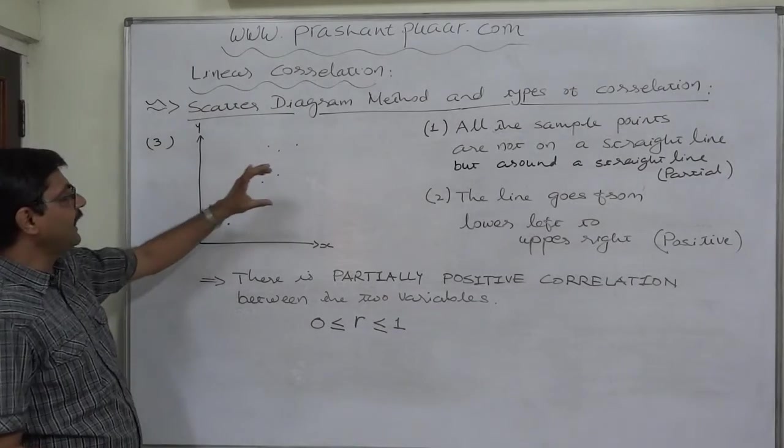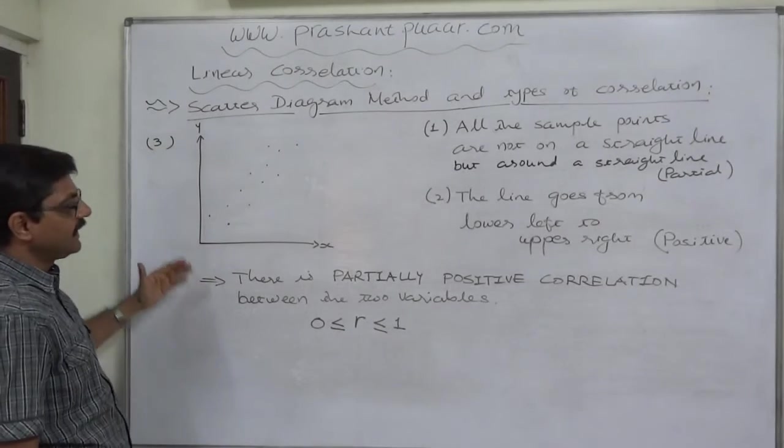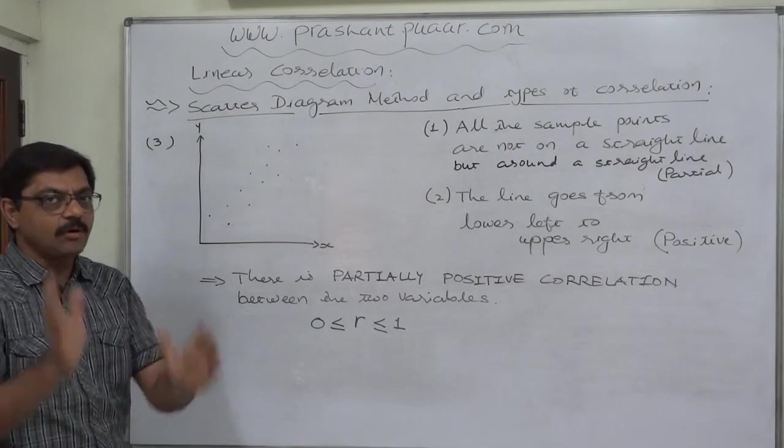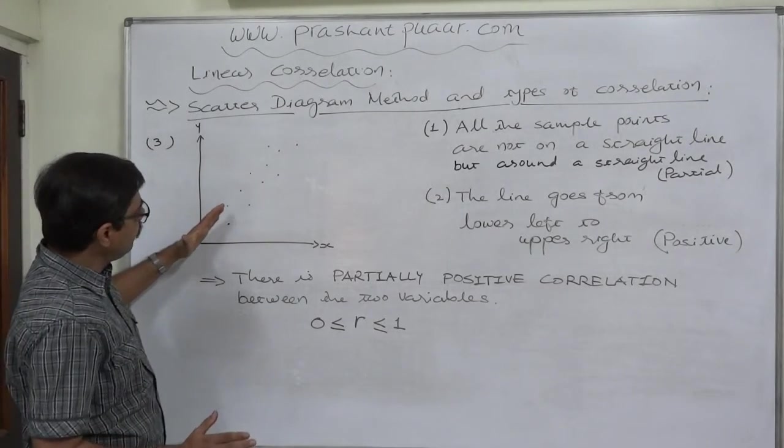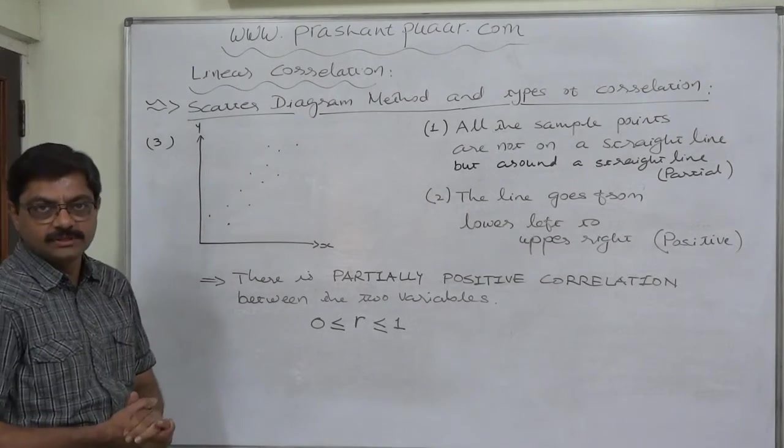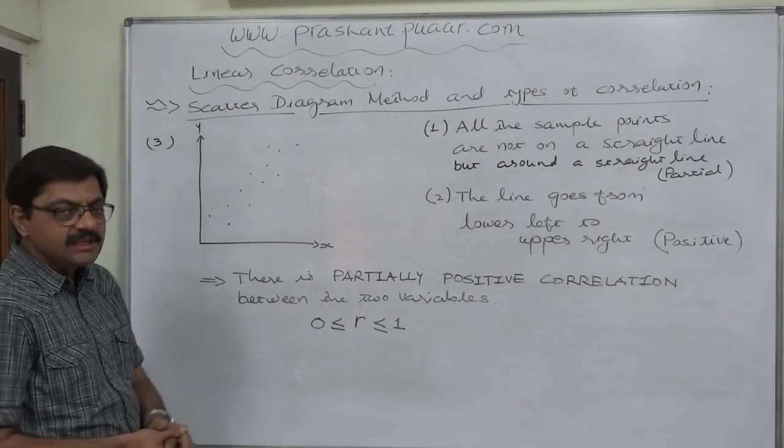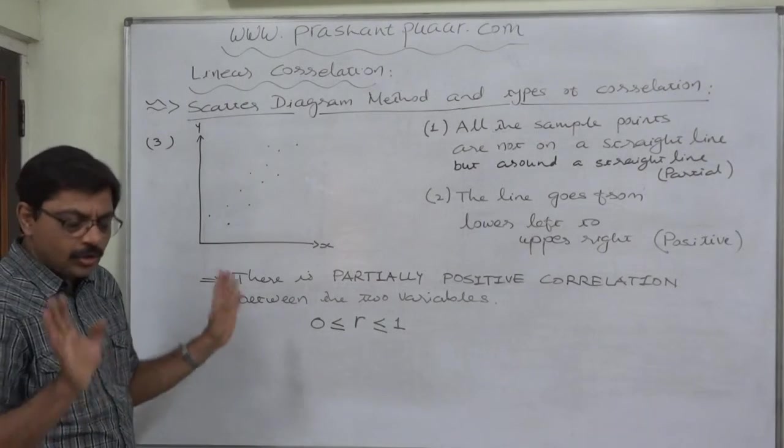They are not on a straight line; they can be imagined around a straight line. That means we can imagine or draw a straight line passing through the sample points, and we can see that all the points are not on the straight line but around it.